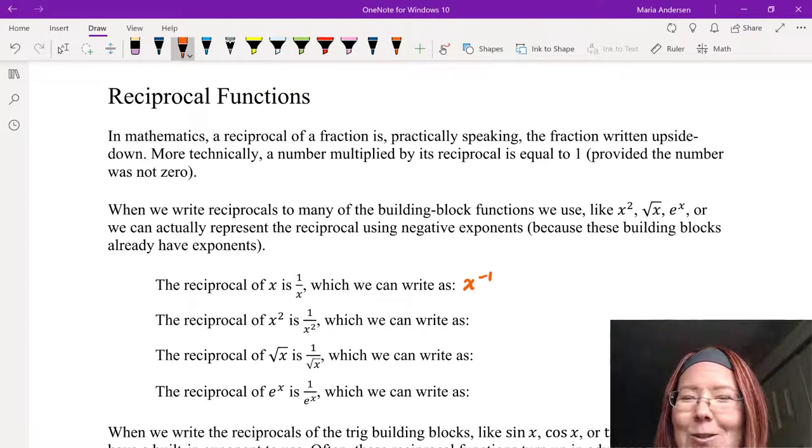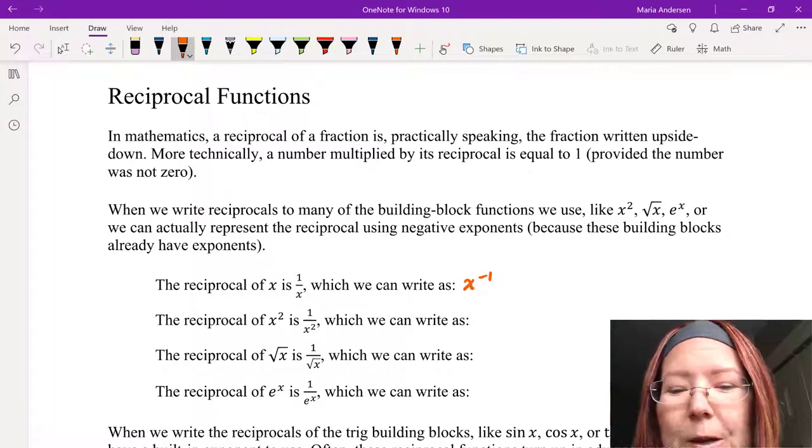The reciprocal of x squared is 1 over x squared, which we could write as x to the negative second.